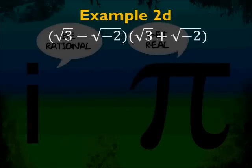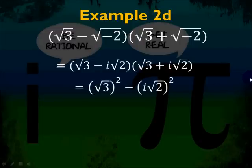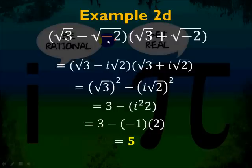Example 2d: radical 3 minus radical negative 2, times radical 3 plus radical negative 2. We have a difference of squares, but before you do anything, you must convert the radicals to get the negative out. We get radical 3 minus i root 2 times radical 3 plus i root 2. Applying difference of squares gives radical 3 squared minus i squared times 2, which is 3 minus negative 1 times 2, so the final answer is 5.